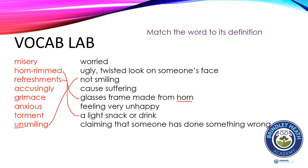Accusingly — if we accuse someone of something, we might claim that someone has done something wrong. Grimace — if you grimace, you might show an ugly twisted look on your face. If you're anxious, you might be worried. If you torment someone, it means you might cause suffering — make them feel sad or unhappy. So then the last one is misery — feeling very unhappy. If you're miserable, you feel very unhappy.